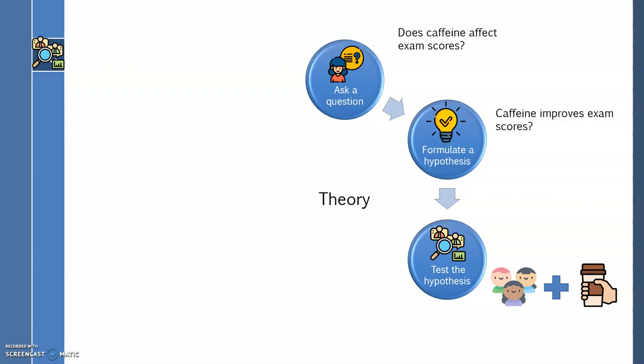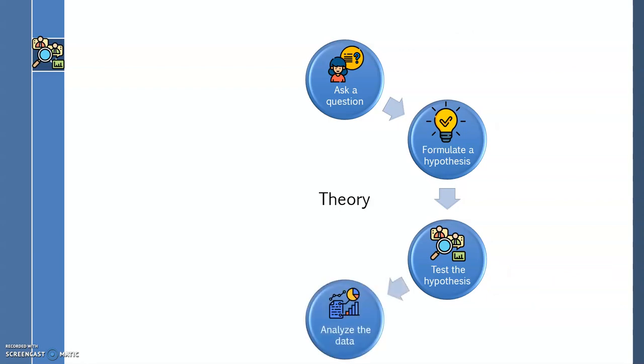Once we have the participants' exam scores, we can perform statistical analyses to see if there are any differences between the groups. Let's say once the numbers are crunched, we conclude that there is a statistically significant difference between exam scores of caffeinated versus non-caffeinated participants. That is, caffeine did in fact improve our participants' exam scores.